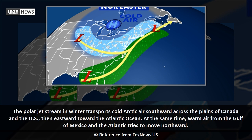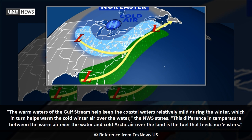The polar jet stream in winter transports cold Arctic air southward across the plains of Canada and the U.S., then eastward toward the Atlantic Ocean. At the same time, warm air from the Gulf of Mexico and the Atlantic tries to move northward. The warm waters of the Gulf Stream help keep the coastal waters relatively mild during the winter, which in turn helps warm the cold winter air over the water.